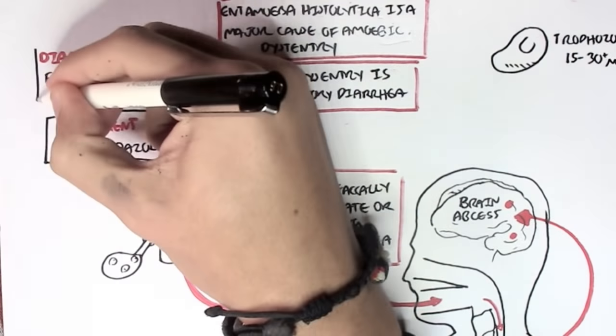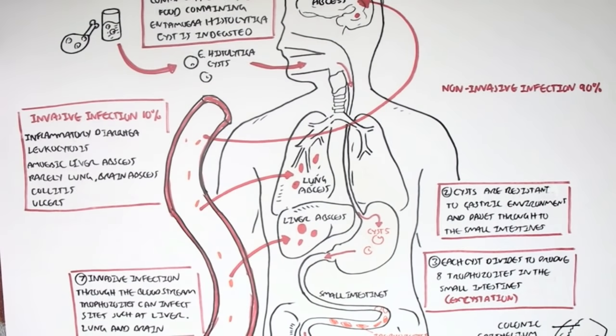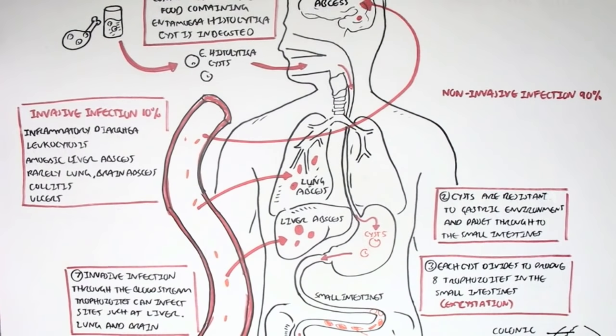From all this, we know that an Entamoeba histolytica infection can be non-invasive or invasive and can cause amoebic dysentery, which is pretty serious.